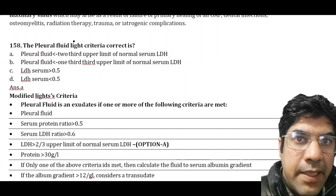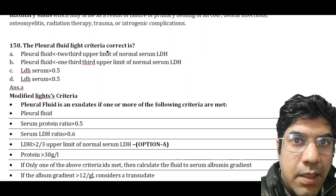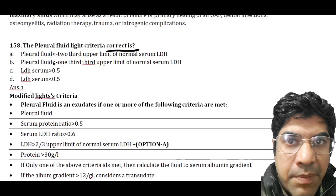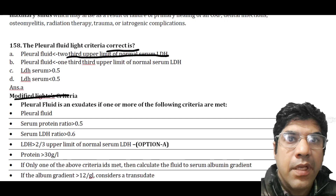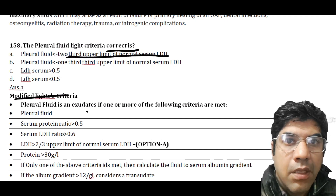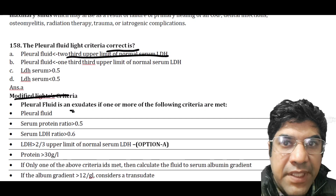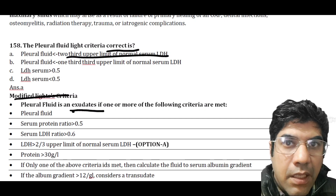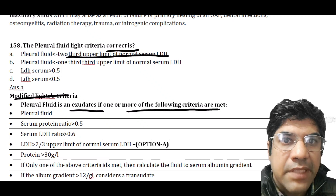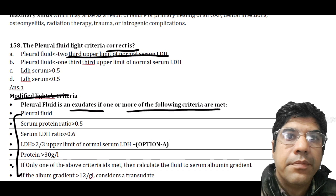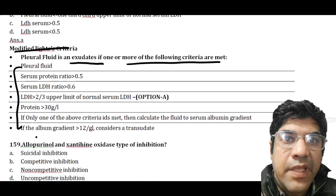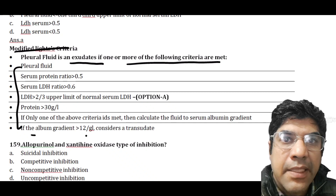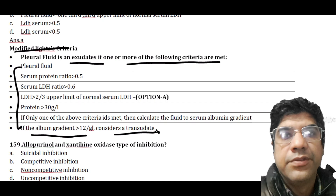The pleural fluid Light criteria: pleural fluid is considered an exudate if one of the following criteria is met. These are the modified Light criteria. If the albumin gradient is greater than 12, it is considered a transudate.